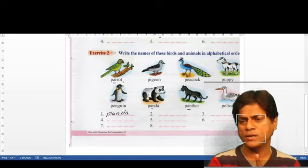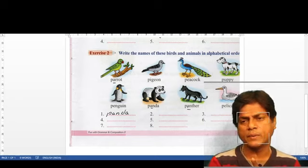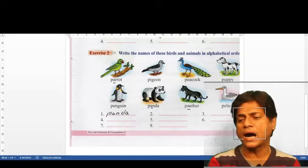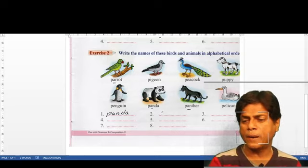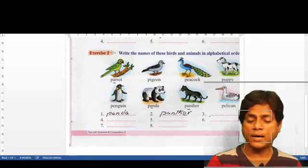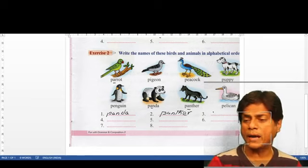Wait, let me correct - this one has P-A-N, third alphabet is N. This one has P-A-R, third alphabet is R. N comes before R, so we will write panther first, then panda, then we come to parrot.